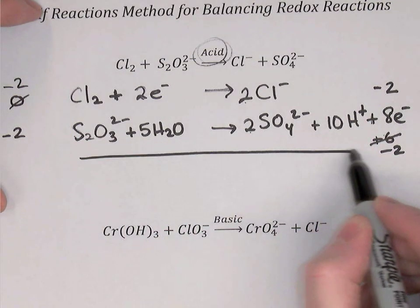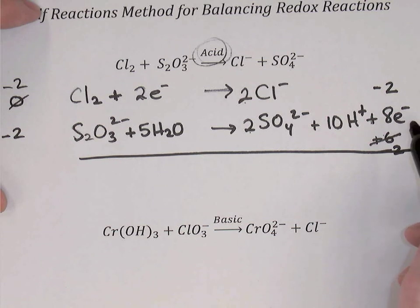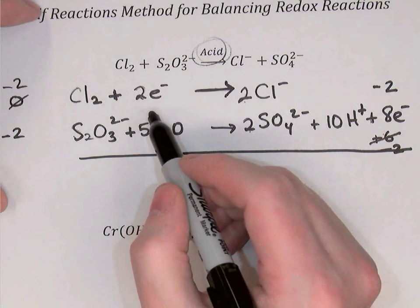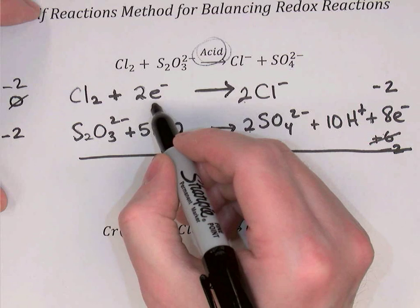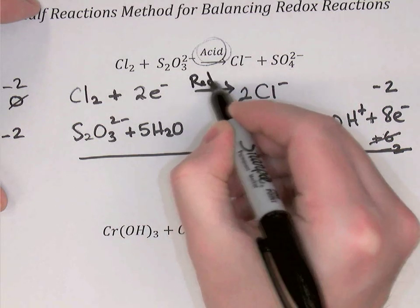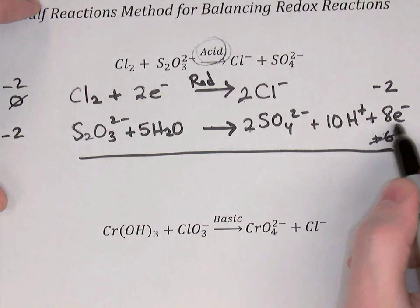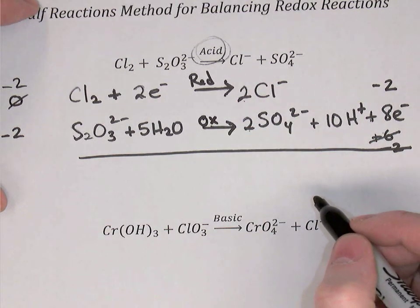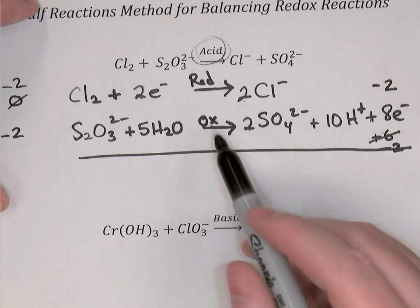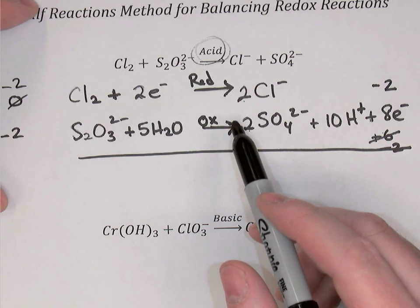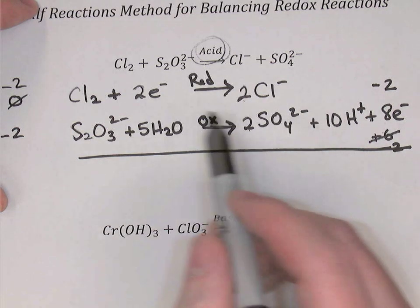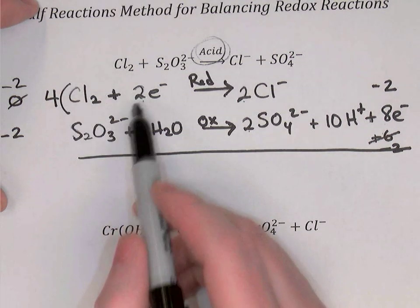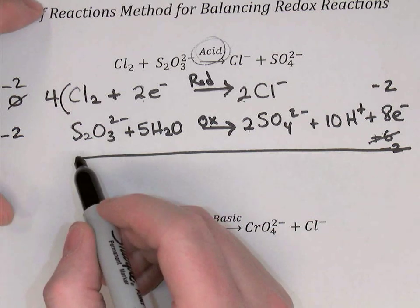Before recombining, we make the electrons equal in both equations. The first equation has 2 electrons on the left — electrons gained, which is reduction. The second equation has 8 electrons on the right — electrons lost, which is oxidation. Electrons lost must equal electrons gained, so we multiply the first equation by 4, giving 8 electrons in both equations. Now we can recombine.